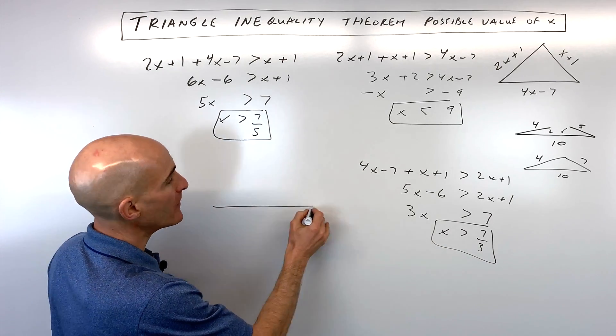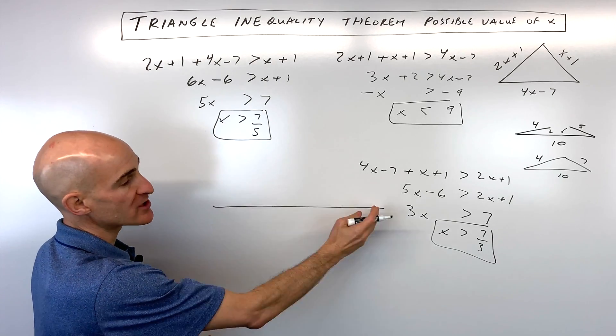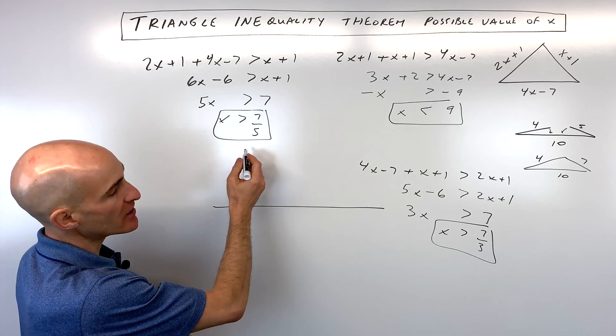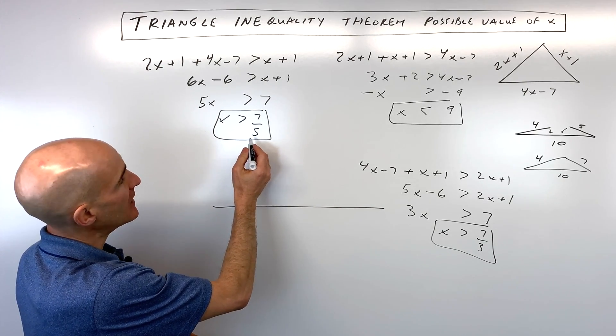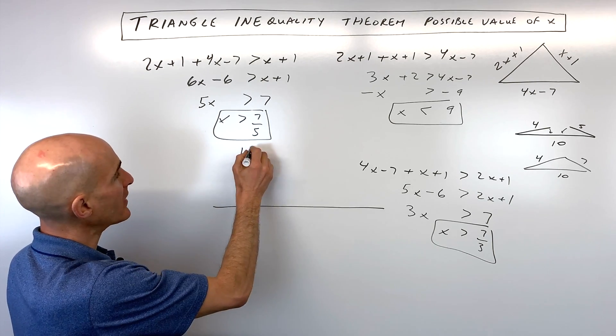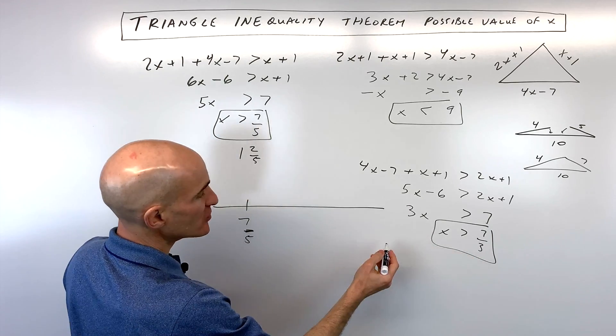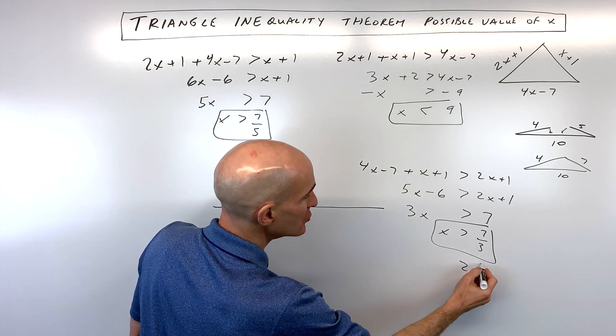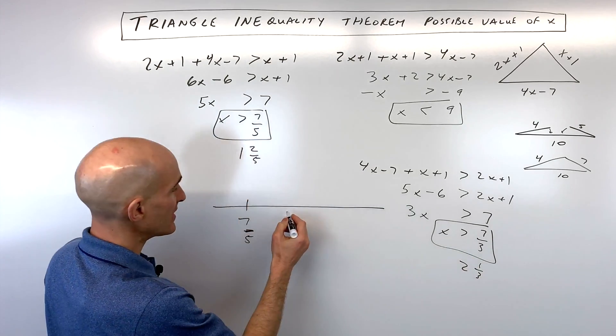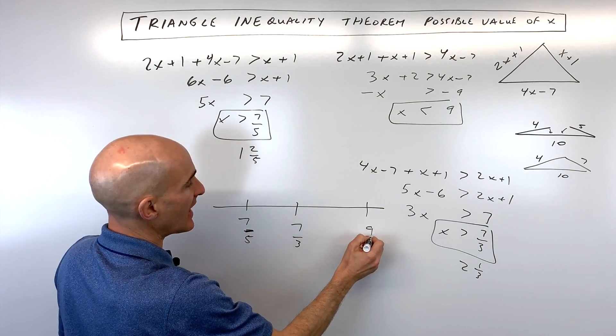What you want to do is you want to plot these on the number line from lowest to greatest. So the smallest number here looks like it's going to be seven-fifths, okay, seven-fifths is like one and two-fifths. Let's see, the next largest is going to be seven-thirds, which is actually like two and one-third, so that's going to be right about here, let's just say seven-thirds. And then over here, nine is the largest, so that's nine.